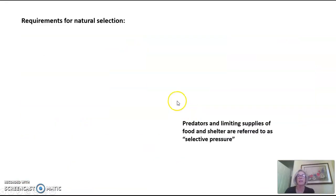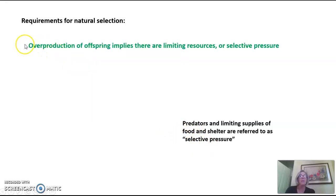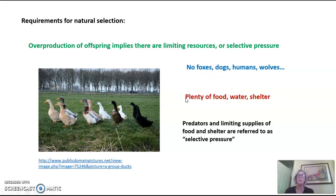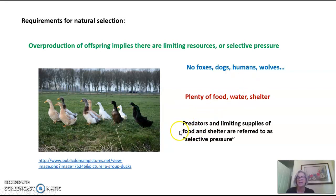What are the requirements for natural selection? The requirements include something called selective pressure — predators and limiting supplies of food and shelter are referred to as selective pressure. If there is overproduction of offspring, that implies there are limiting resources or selective pressure. If there were no predators and plenty of food, water, and shelter — no competing for resources — then there is no selective pressure and natural selection will not occur. So in order to see natural selection, there must be selective pressure: a limiting resource or predator.